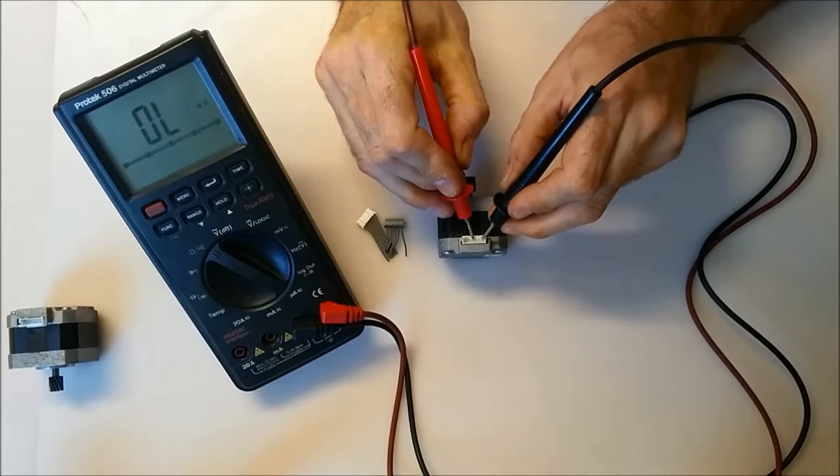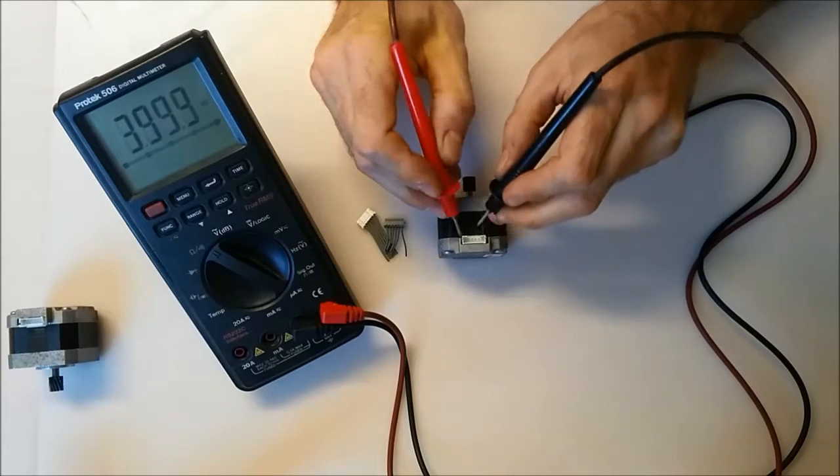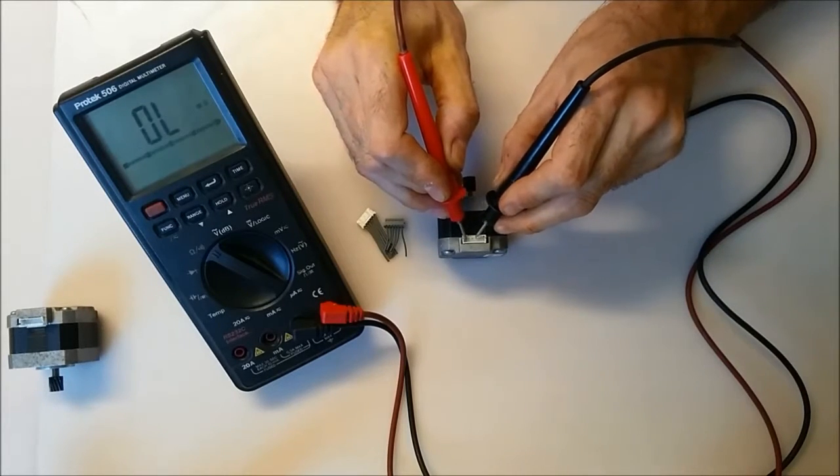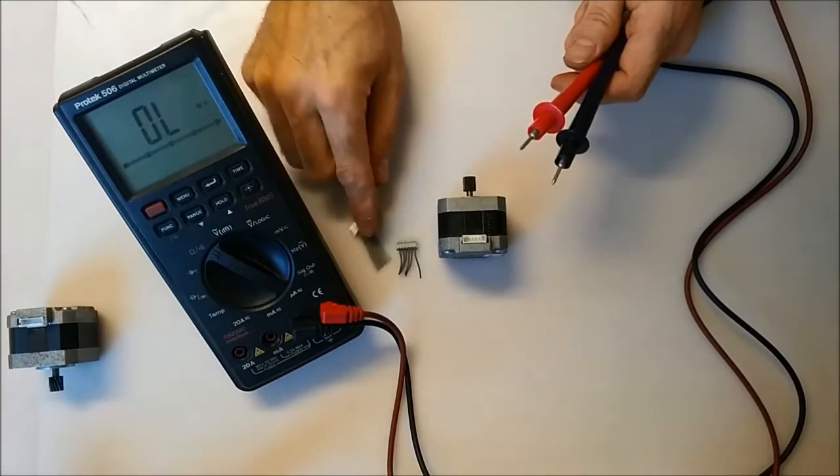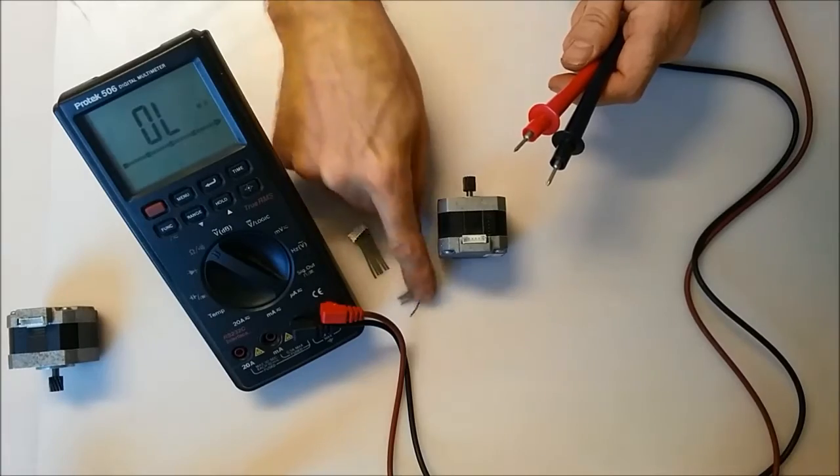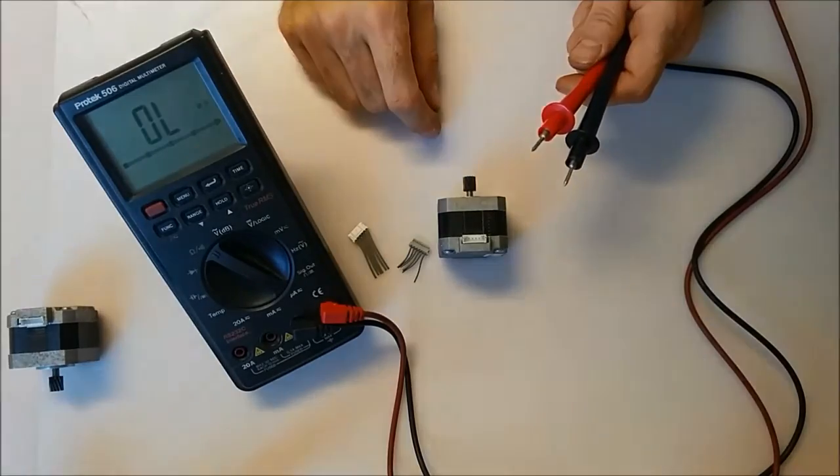That's one winding there, pins 1 and 4. Pin 6 and 3 is the other winding. We're going to solder wires onto those, or onto the little connectors anyway, so we can use those specific pins.